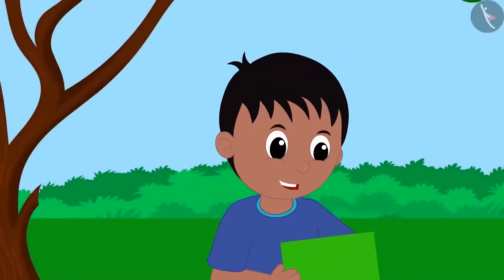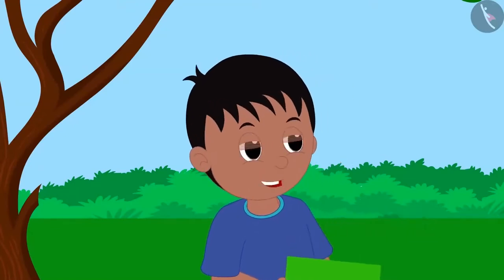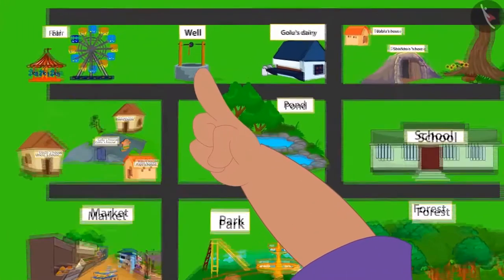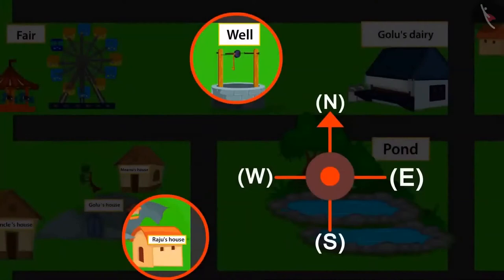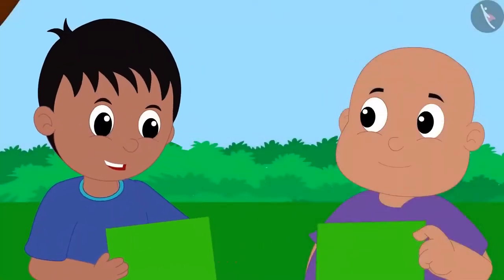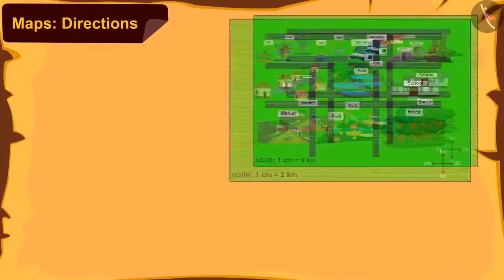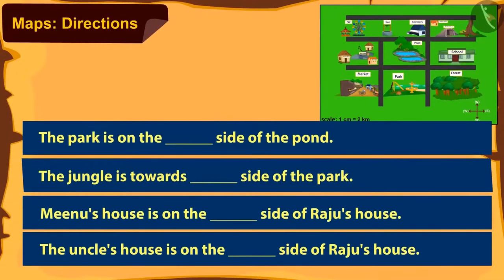Raju confirmed it was correct and then asked: the well is towards which direction from my home? Bablu answered: this is your home and this is the well. The well is above your home on the map, which means according to the compass, the well is towards the north from your house. Bablu's answer was absolutely right. Kids, can you use the compass to complete the table? You can pause the video to find the answer.